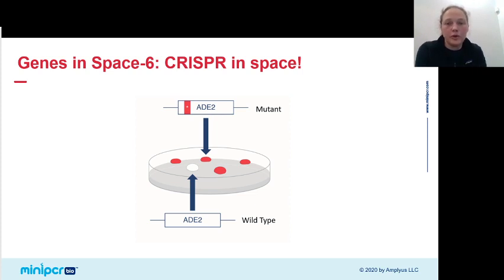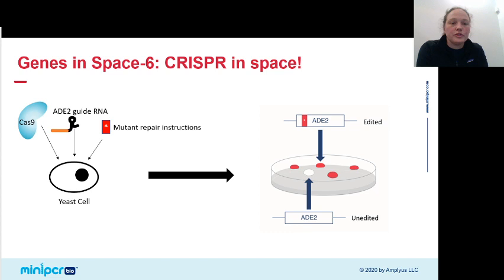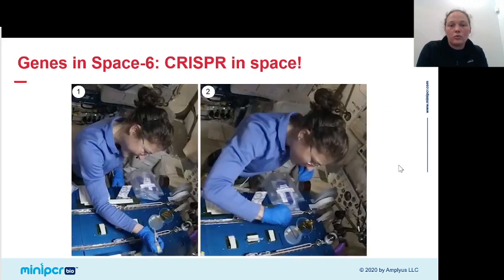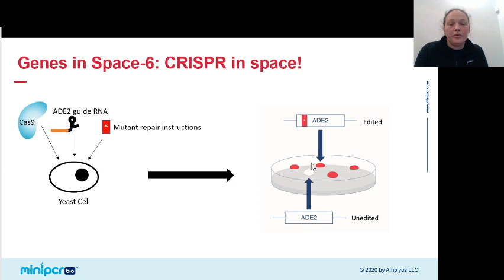We selected this gene because it gave a visual readout of the editing — scientists here on Earth and astronauts in space could simply look at a plate and say whether or not these yeast cells had been edited using CRISPR-Cas9 genome editing. So we flew yeast cells to the International Space Station, and we also brought the components to do CRISPR-Cas9 genome editing. In space, we added them to the cells — Cas9 and a guide RNA targeting the ADE2 gene — and we also added mutant repair instructions to ensure that the gene was edited in a particular way. Then we grew these cells on the space station and looked to see whether the cells were white, suggesting they hadn't been edited, or red, indicating they had potentially been edited using CRISPR.